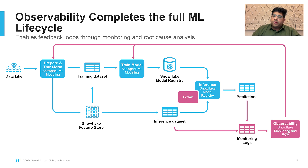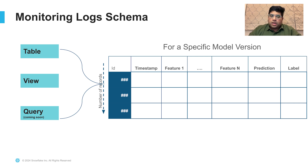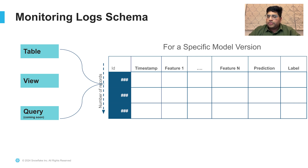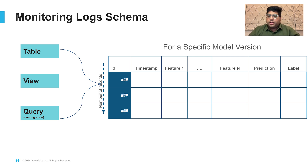Let's take a deeper look at what these monitoring logs look like. Monitoring logs is a table or view with an ID column to uniquely identify each row, a timestamp column indicating when the prediction happened, the different features used by the model for making the prediction, the prediction itself, and optionally the ground truth label if available. The observability product expects you to provide this as a table or view as a configuration parameter.